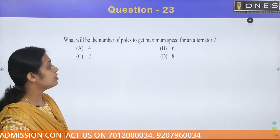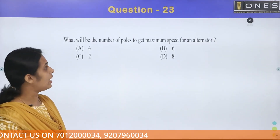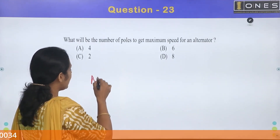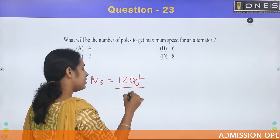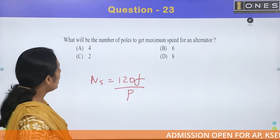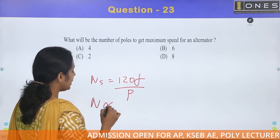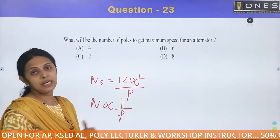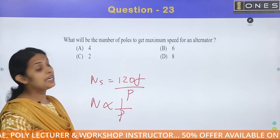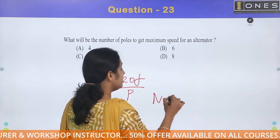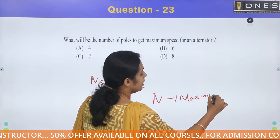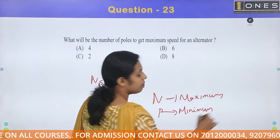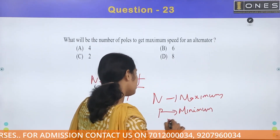What will be the number of poles to get maximum speed for an alternator? Speed is equal to 120f divided by p. Speed is inversely proportional to number of poles. So, to get maximum speed, the number of poles must be minimum. The minimum value of poles is 2.